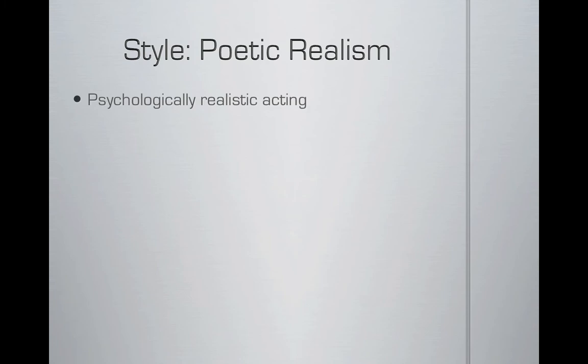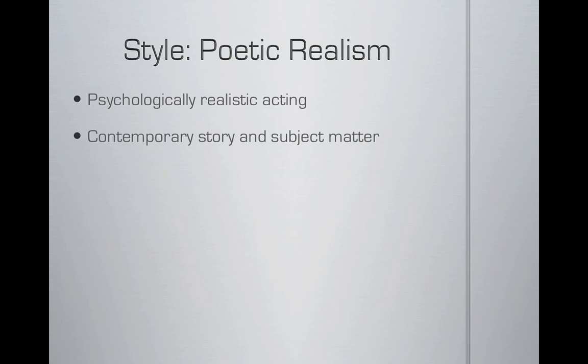Poetic realism is very much a post-war American phenomenon. Arthur Miller and Tennessee Williams are the two primary practitioners. It involves psychologically realistic acting — nothing as abstract as the absurd, for example. It's very straightforward, very psychologically realistic. You study characters, real life historical figures, actual people, things like that. Generally speaking, poetic realism is always set in a particular time, a historical era, and it's almost always contemporary. Both Tennessee Williams and Arthur Miller tend to write about things that happened in America in the 20th century, for the most part. So contemporary story and subject matter is a key.